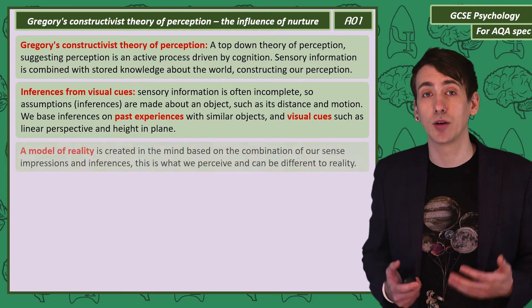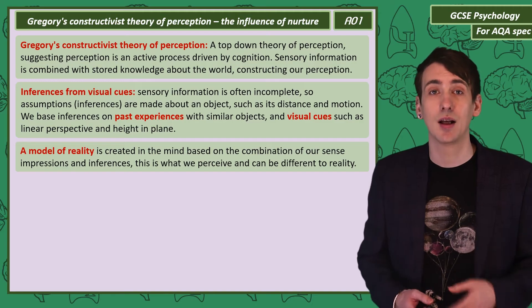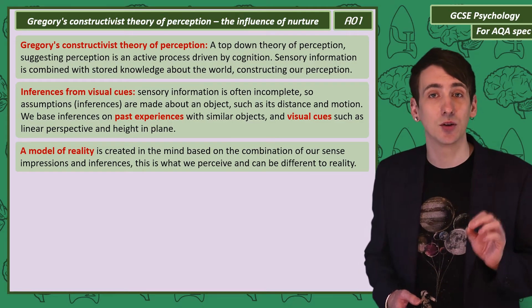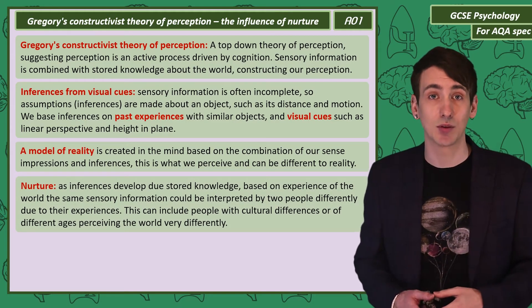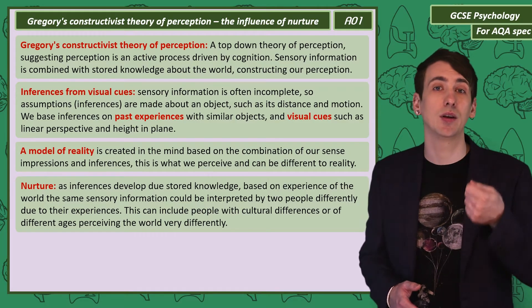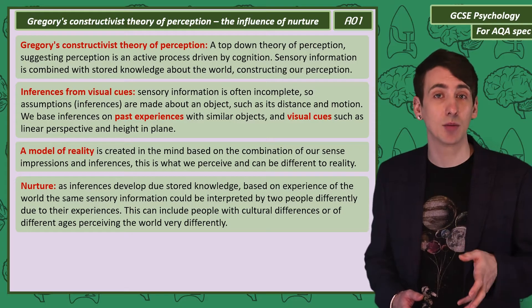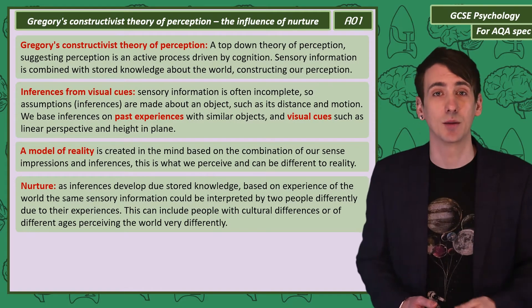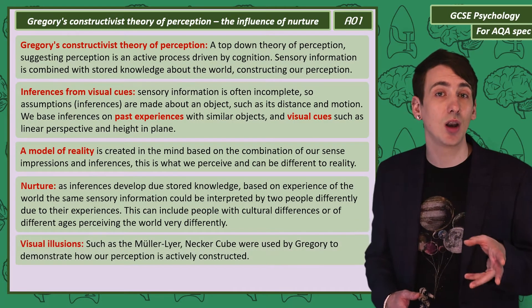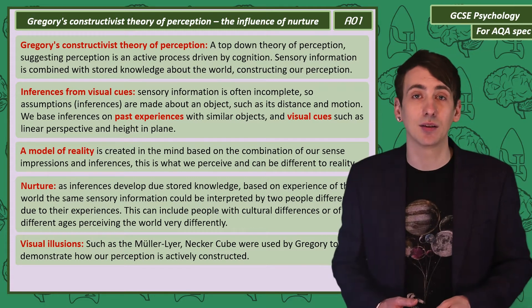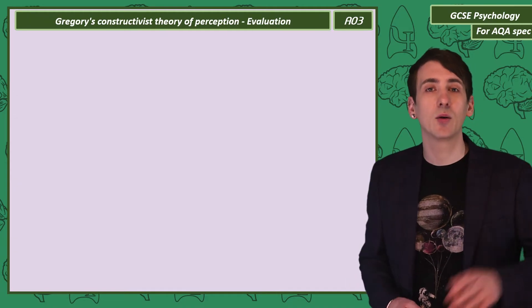Inside our mind we create what is called a model of reality. This is what we perceive and is influenced by a range of factors. This model of reality is different to what's really out there in the world. Gregory's theory takes a nurture approach to explaining perception. We make our inferences based on the experiences we've had with the world, so the same sensory information can be interpreted by two different people very differently, say if they've had different cultural experiences. Gregory used visual illusions like the Müller-Lyer to demonstrate his ideas. They're good examples of how your brain has to make assumptions based on limited information.